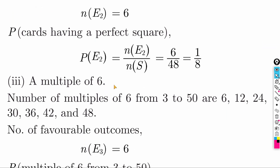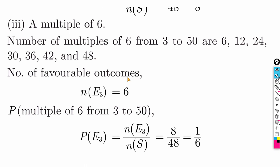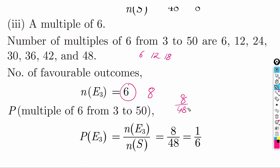Now find the probability of a multiple of 6. Multiples of 6 from 3 to 50 are: 6, 12, 18, 24, 30, 36, 42, 48 — that is 8 numbers. Total = 48. Answer is 8 by 48, which equals 1 by 6.